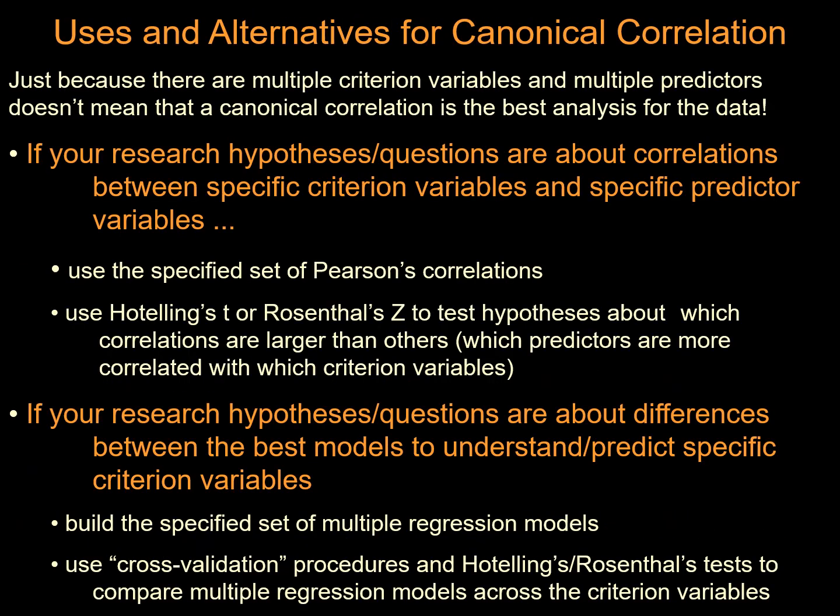When talking about uses: just because there are multiple criterion variables and multiple predictors doesn't necessarily mean canonical correlation is the best analysis. But researchers use canonical correlation analysis as one of the most influential methods for data similarity identification. If your research hypothesis is about correlation between specific criterion variables and specific predictor variables, definitely use this canonical correlation model. It's also possible to test which correlations are larger than others and which predictors are more correlated with which criterion variables.